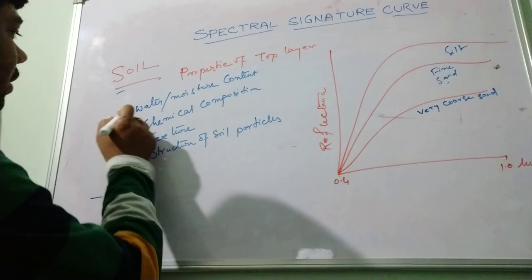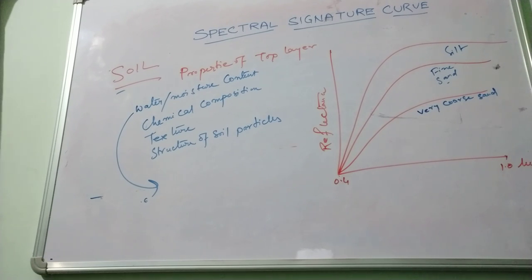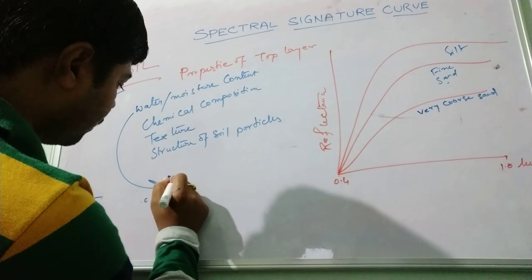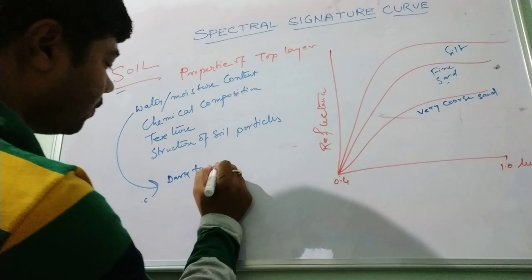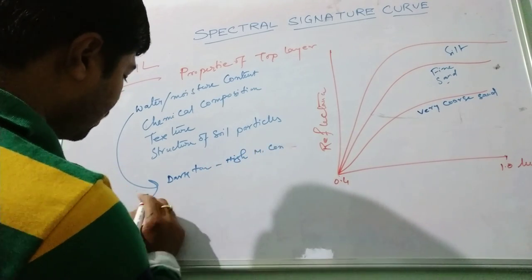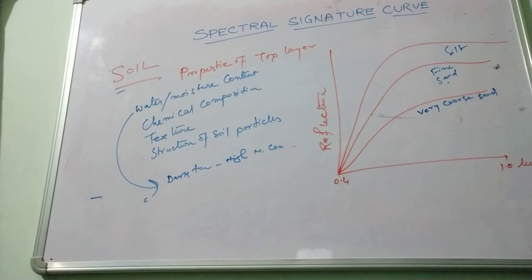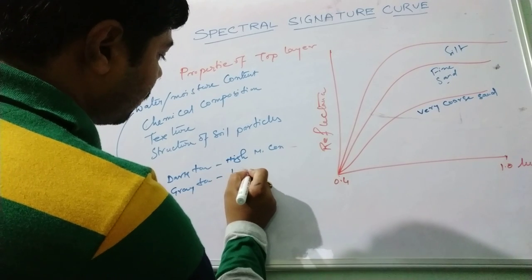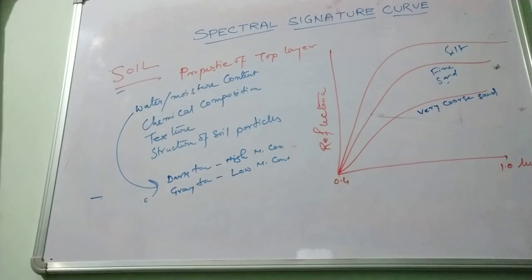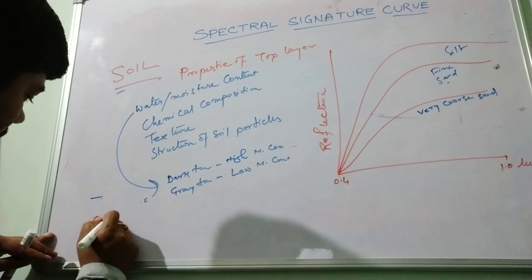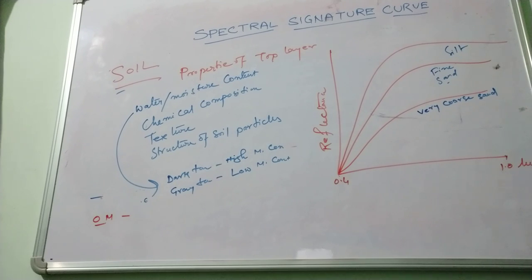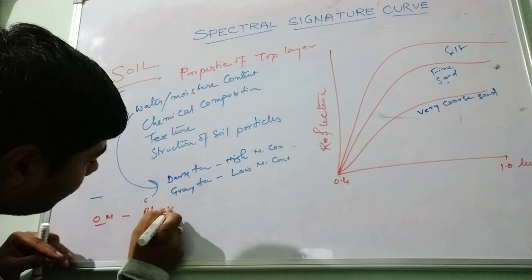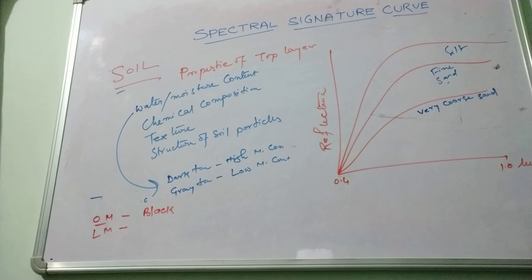Another important factor is moisture content. Soil with larger moisture content appears as a dark tone, while soil with low moisture content appears lighter. Similarly, soil with high organic matter content appears black in color, and soil with low organic matter content appears in a gray tone.